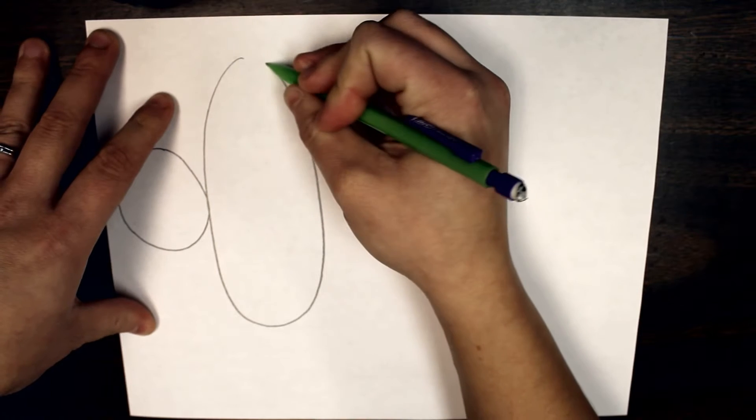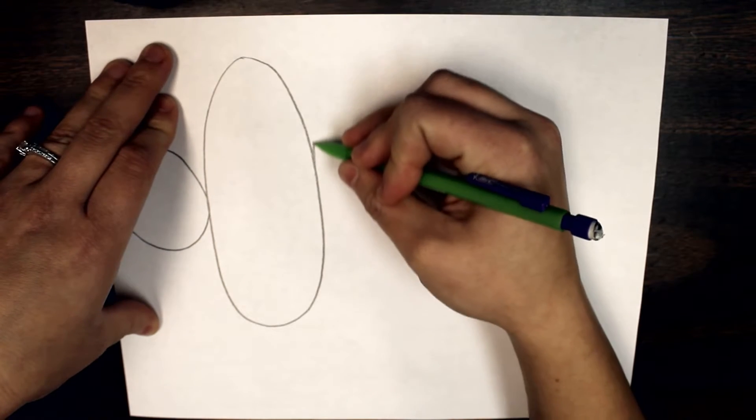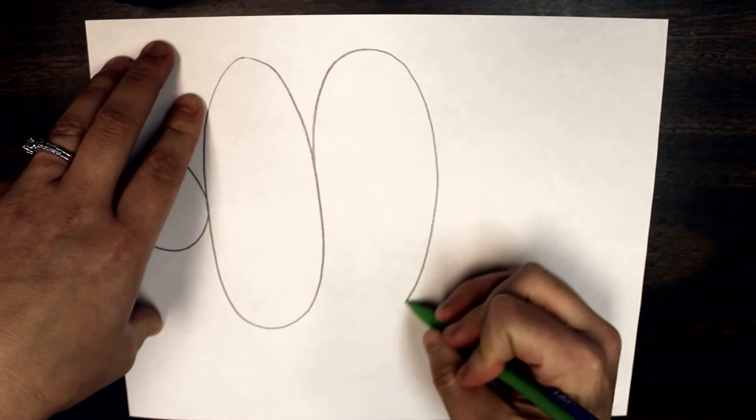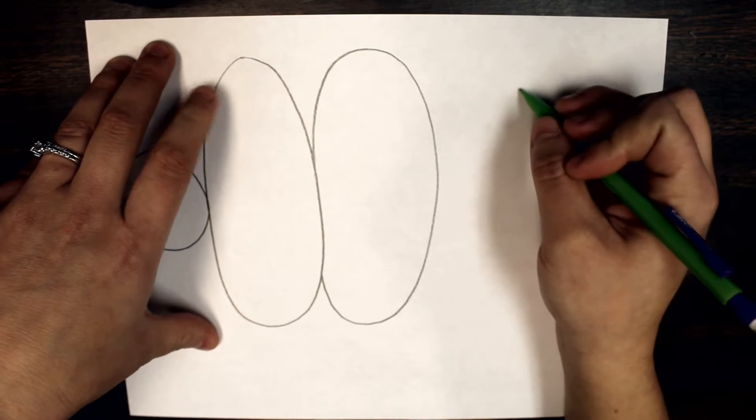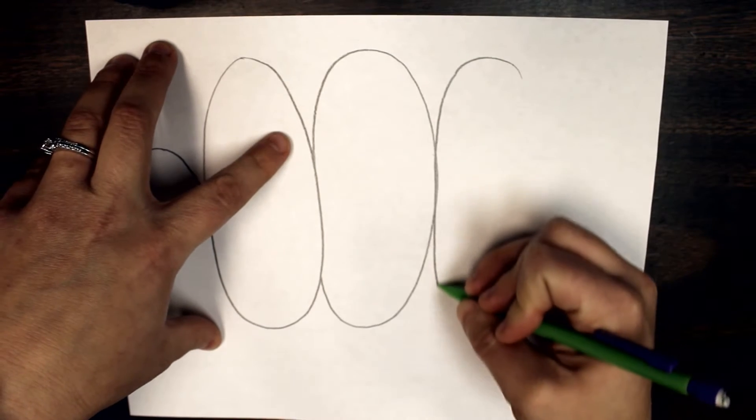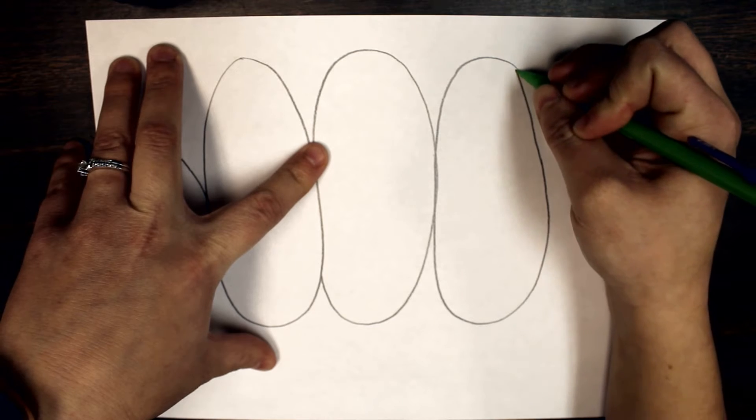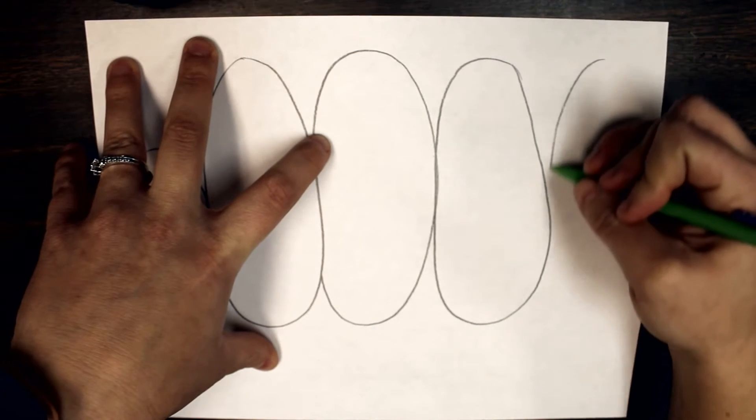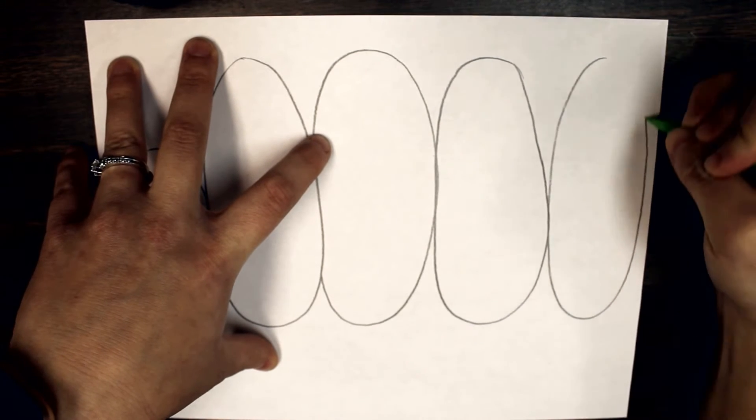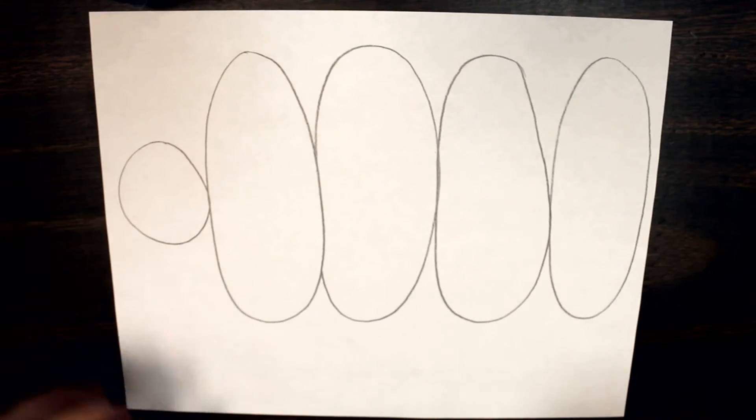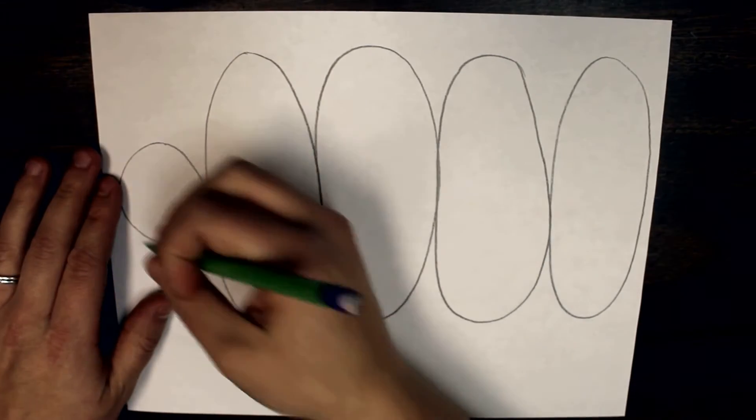For the body we're going to be making these ovals and we're going to make sure all of our ovals are touching each other and going all the way across the paper. You can make these as skinny as you'd like. If you make them more skinny you can fit more of these ovals. As soon as you get to the edge of your paper you can stop making ovals.